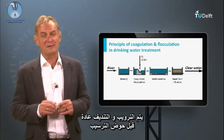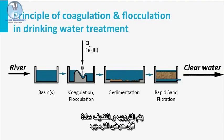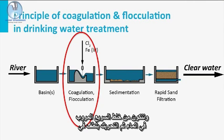Coagulation and flocculation is normally performed before the sedimentation tank. It consists of rapid mixing of the coagulant in the water, and then gentle stirring in a flocculation tank for optimal floc formation.